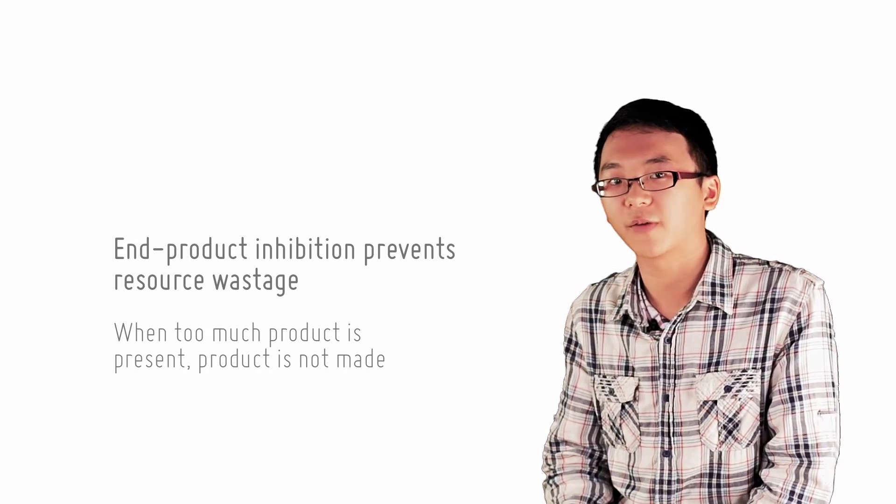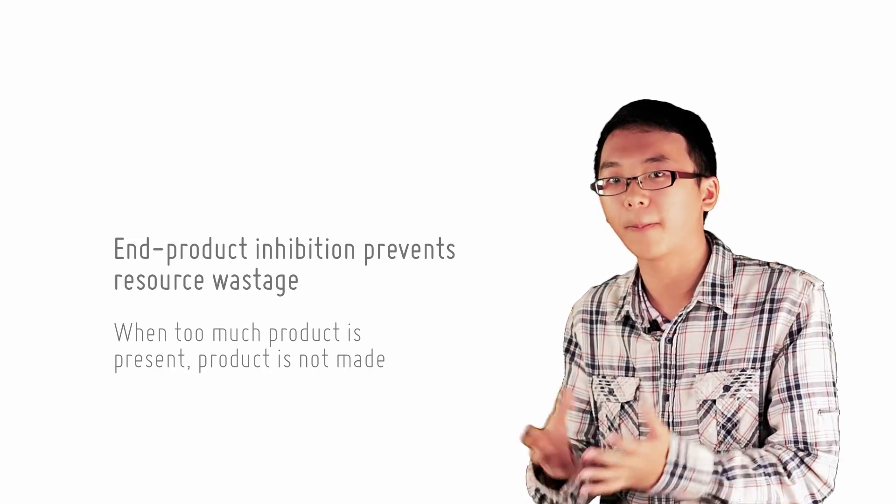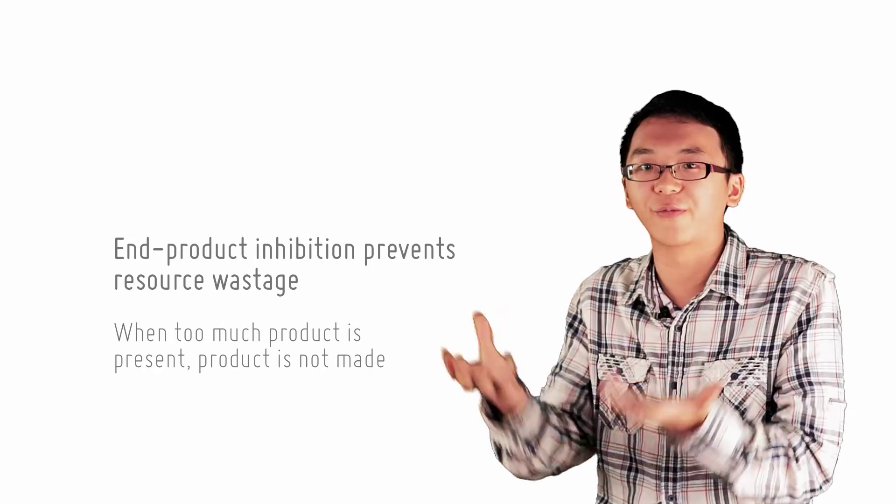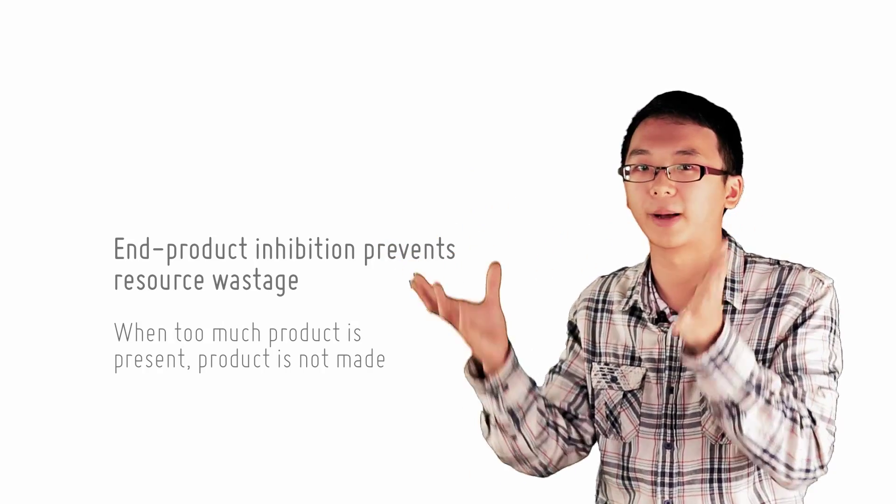This mechanism is often seen in anabolic pathways, which are pathways involved in the formation of compounds from smaller subunits, as opposed to catabolic pathways which are pathways that involve the breaking down of big compounds to small stuff.